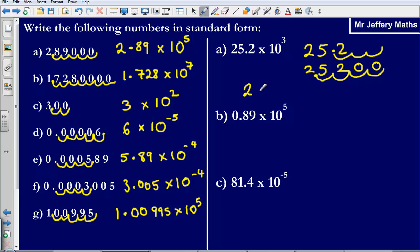So it's going to be 2.52 times 10 and it moved over 1, 2, 3, 4 places.